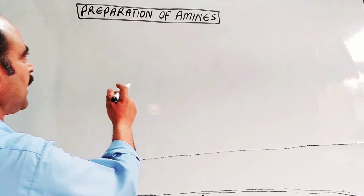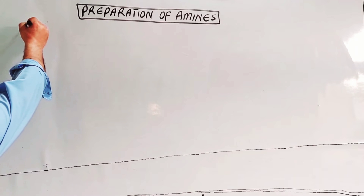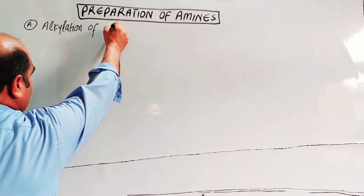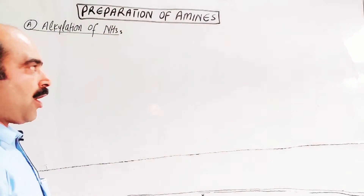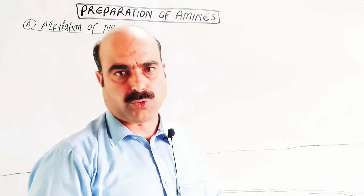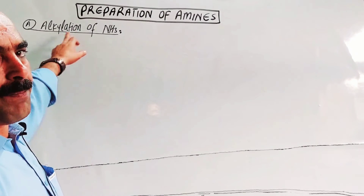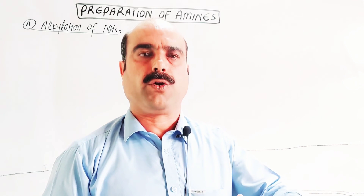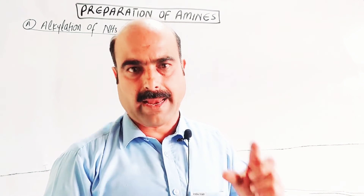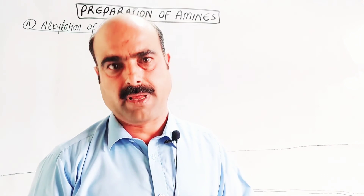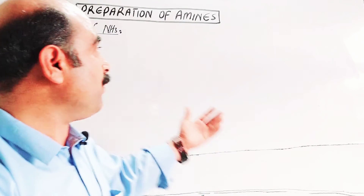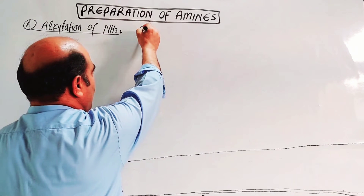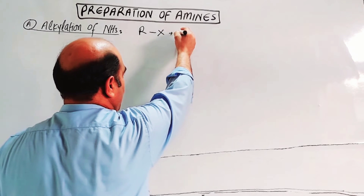The first method for preparation of amines is the alkylation of ammonia. Amines are the derivatives of ammonia. Alkylation means the addition of an alkyl group to ammonia, replacing one of the hydrogen atoms of ammonia with an alkyl group. The alkyl group is provided by alkyl halides. The general reactants are an alkyl halide (R-X) and ammonia (NH3).